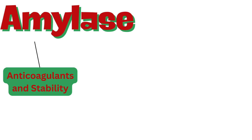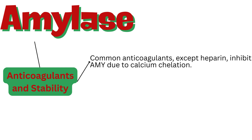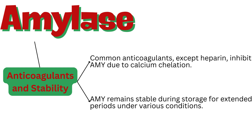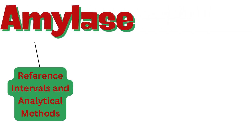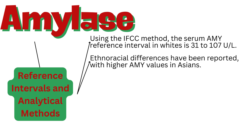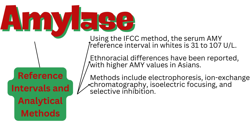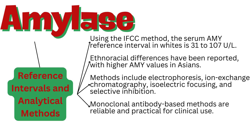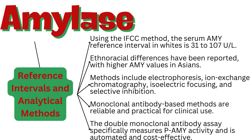Common anticoagulants, except heparin, inhibit AMY due to calcium chelation. AMY remains stable during storage for extended periods under various conditions. Using the IFCC method, the serum AMY reference interval is 31 to 107 units per liter. Ethnoracial differences have been reported, with higher AMY values in Asians. Analytical methods for amylase isoenzymes include electrophoresis, ion-exchange chromatography, isoelectric focusing, and selective inhibition. Monoclonal antibody-based methods are reliable and practical for clinical use. The double monoclonal antibody assay specifically measures PAMY activity and is automated and cost-effective.